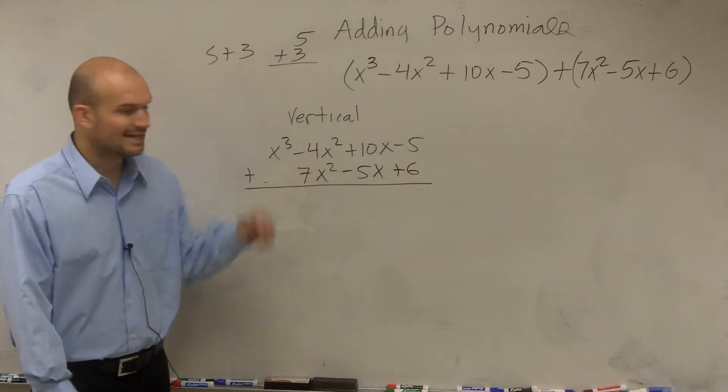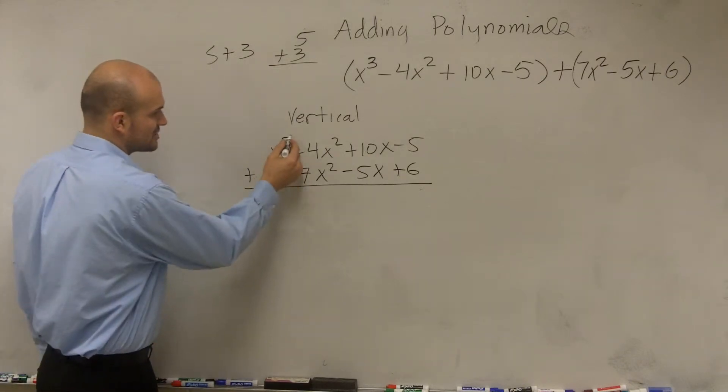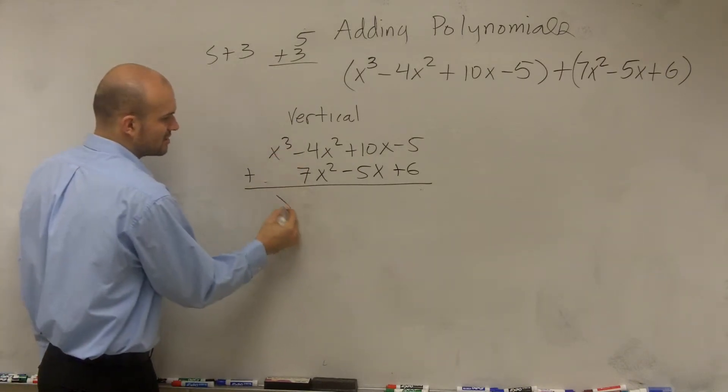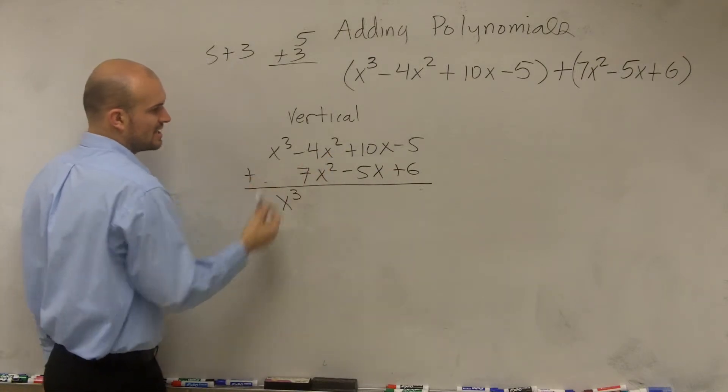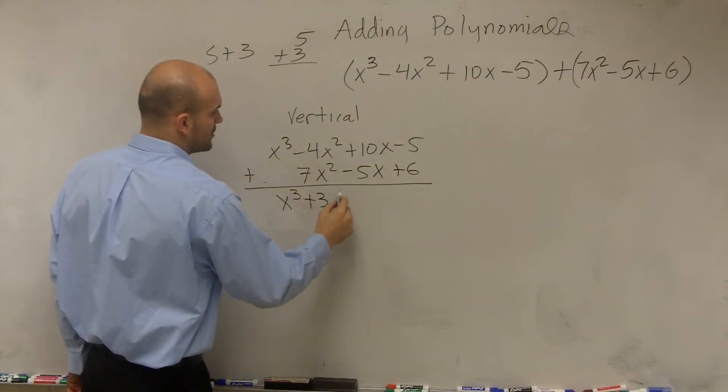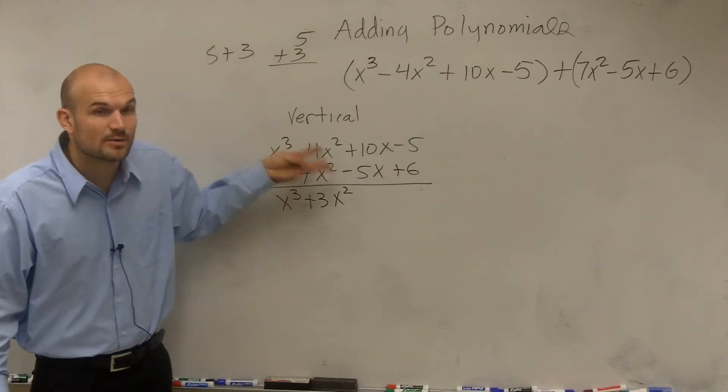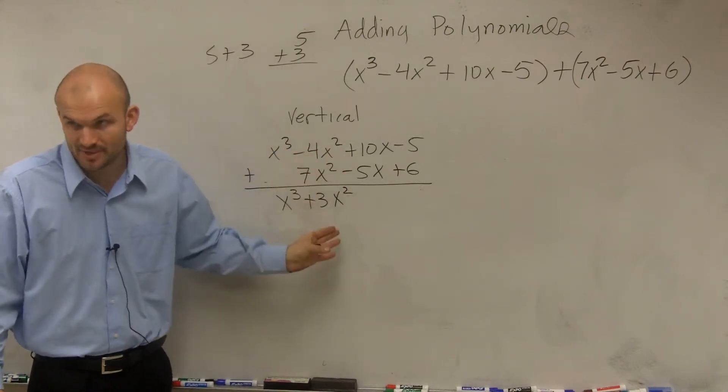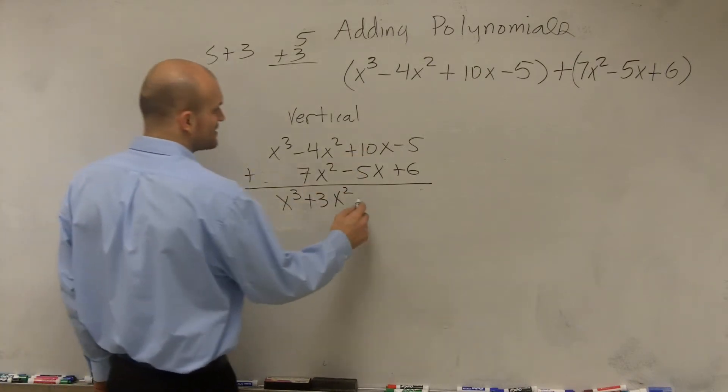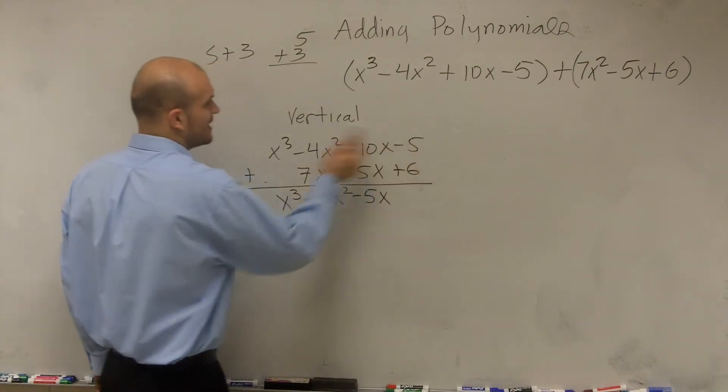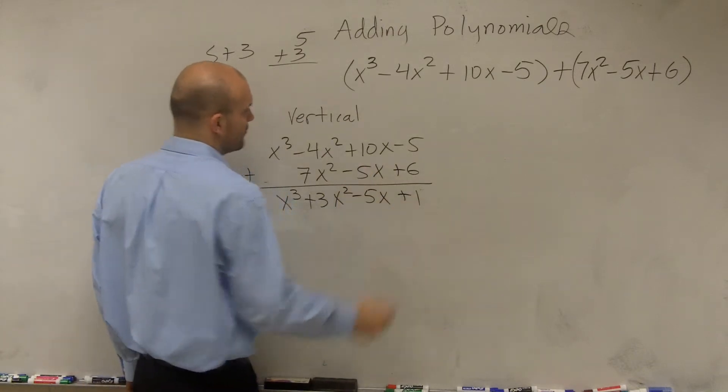So when adding these, x³ plus 0 is x³. Negative 4x² plus 7x² is positive 3x². Remember, since the variable factors are the same, we keep it. Then 10x plus negative 5x is positive 5x. Negative 5 plus 6 is positive 1.